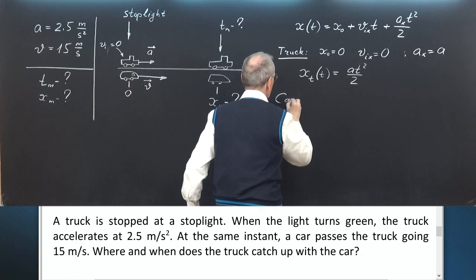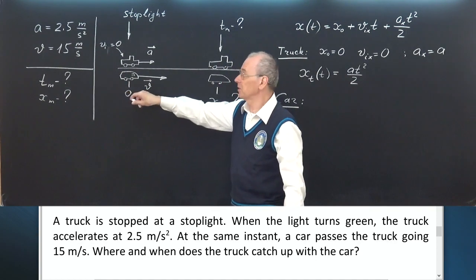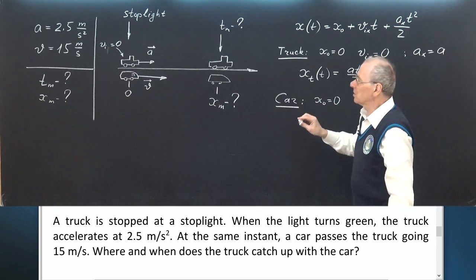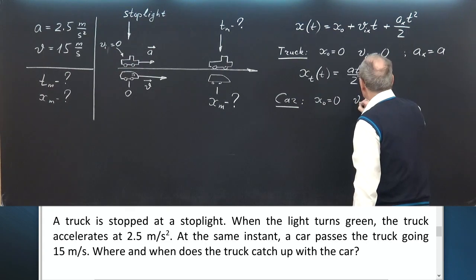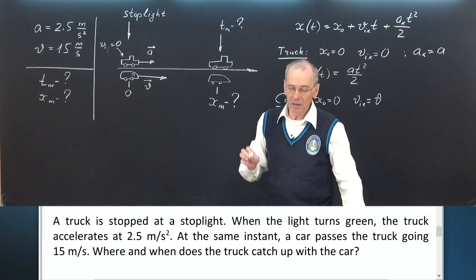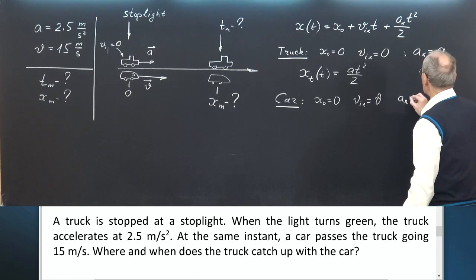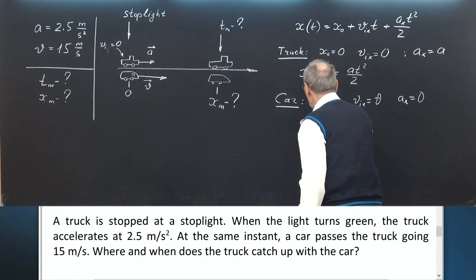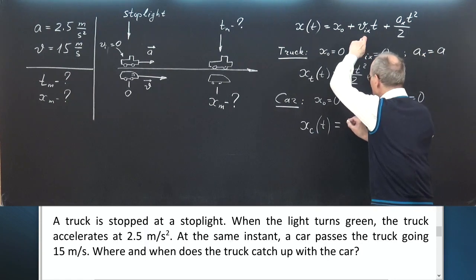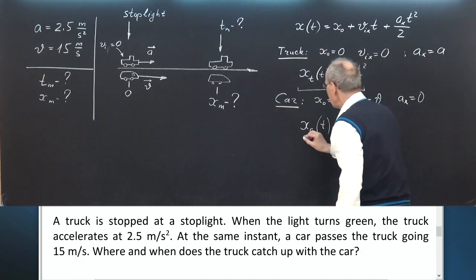For the car: at the starting moment in time, the car has the same position as the truck, so its coordinate x0 is zero. It moves at a constant velocity, so we can write the initial Vx is simply V. The car is going at constant velocity, at constant speed, so acceleration is zero, ax is zero. So x car at any moment in time is zero plus V times t plus zero. This is for the car.